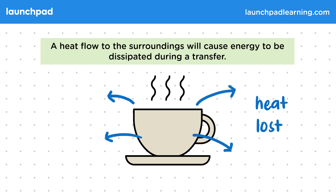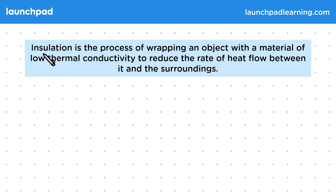But how can we reduce the energy lost from a heat flow? We can do that using insulation. Insulation is the process of wrapping an object with a material of low thermal conductivity to reduce the rate of heat flow between it and the surroundings. So heat flow can't be stopped completely, but it can be slowed down. Insulation is really important as it means we don't have to keep reheating things or cooling them again and again, which saves energy, time and money.